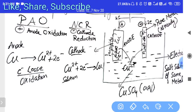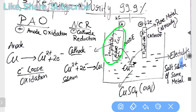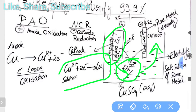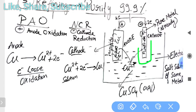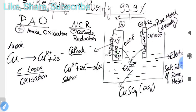At the anode, copper from the impure metal loses two electrons (oxidation — loss of electrons) and goes into the electrolyte as positive ions. These copper ions travel through the electrolyte to the cathode, where they gain electrons (reduction) and are deposited as pure copper. The anode gradually decreases in size and the cathode gradually increases, giving us pure copper. This is the electro refining process.